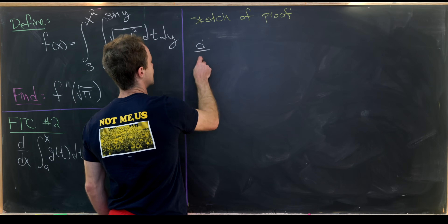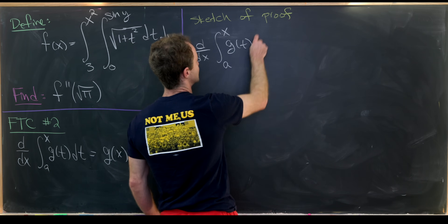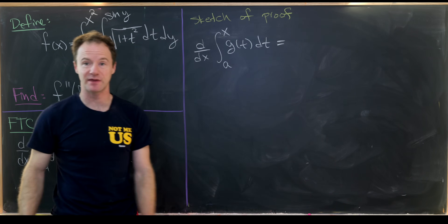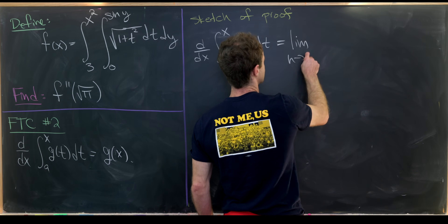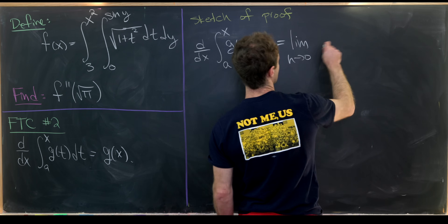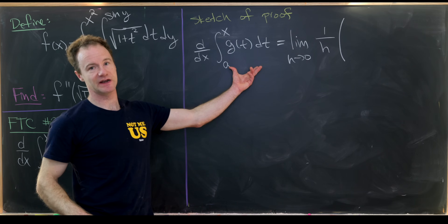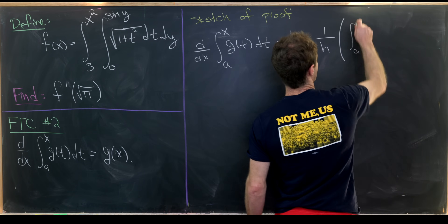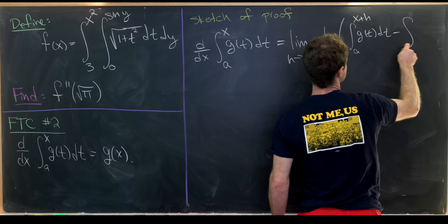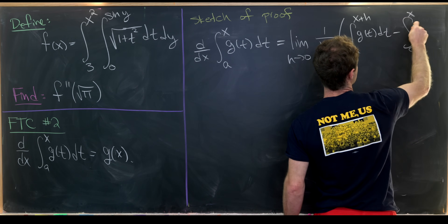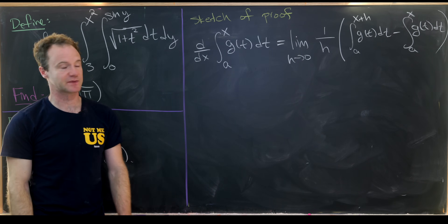So let's take the derivative with respect to x of the integral from a to x of g(t) dt, using the limit definition of the derivative. This is equal to the limit as h goes to zero of one over h times this function evaluated at x plus h — which is the integral from a to x plus h of g(t) dt — minus this integral evaluated at x.